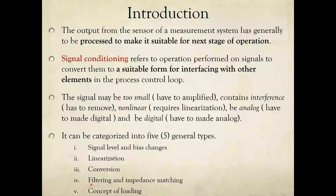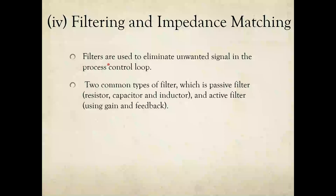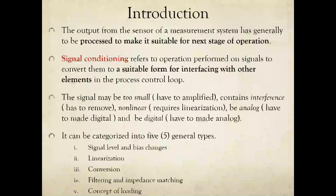The fourth type of signal conditioning is filtering and impedance matching. Filters are used to eliminate unwanted signals in the process control loop. Two commonly used types are passive filters and active filters, and these will be covered in more detail in the next objective.